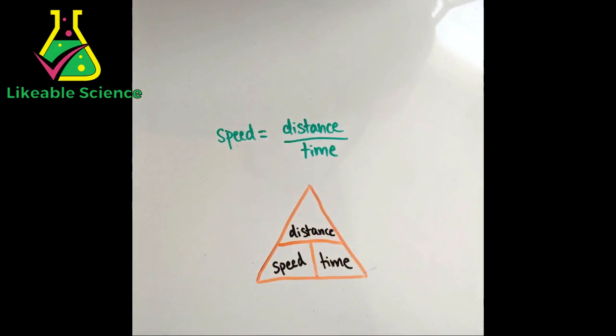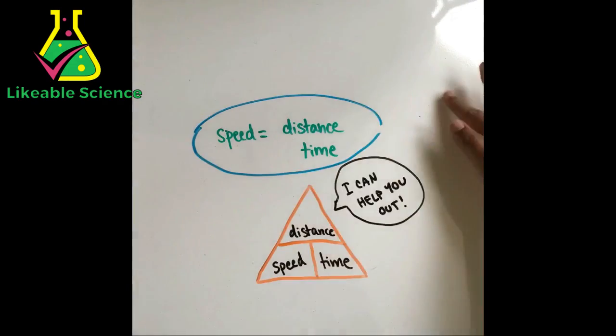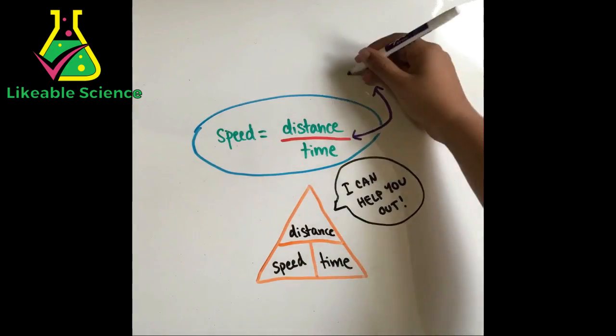This triangle can help you out a lot when it comes to solving speed, distance, and time equations. The formula above the triangle is speed equals distance over time.